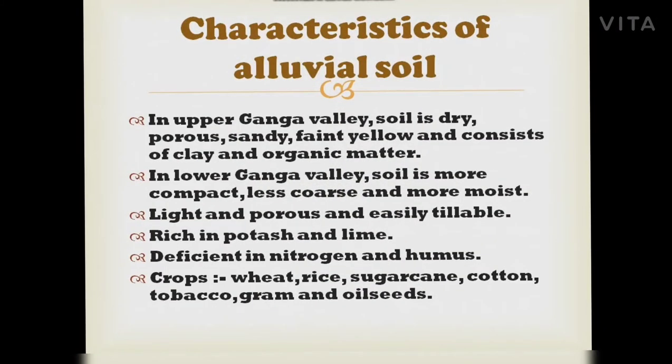Some characteristics of alluvial soil: in the Upper Ganga Valley, soil is dry, porous, sandy, faint yellow, and consists of clay and organic matter. In the Lower Ganga Valley, soil is more compact, less coarse, and more moist. It is light, porous, and easily tillable. It is rich in potash and lime but deficient in nitrogen and humus.